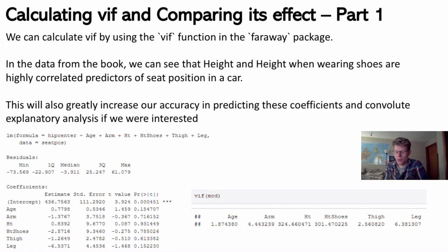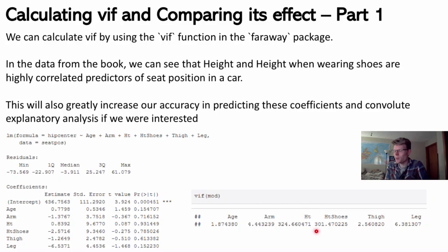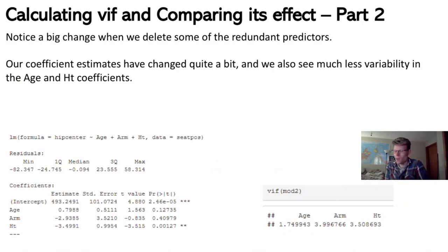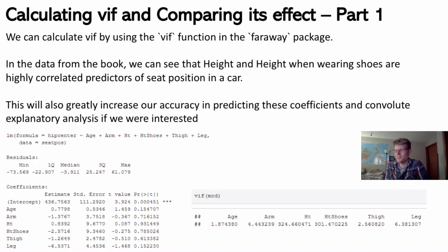Because they're so redundant, the standard error for these beta coefficients is quite high — the beta coefficients could be wildly off because the variance inflation factor is so high. The coefficient represents the change in the response for every one-unit increase in that predictor given all other factors held constant. But what does it mean for height to have an effect on seat position if height-with-shoes is remaining constant? If these are so highly correlated, it's kind of meaningless because they have to move together.